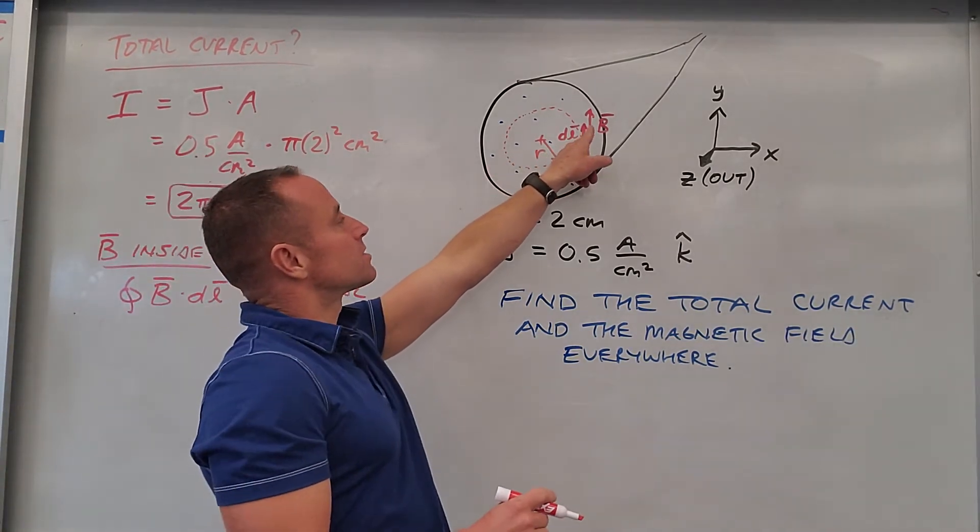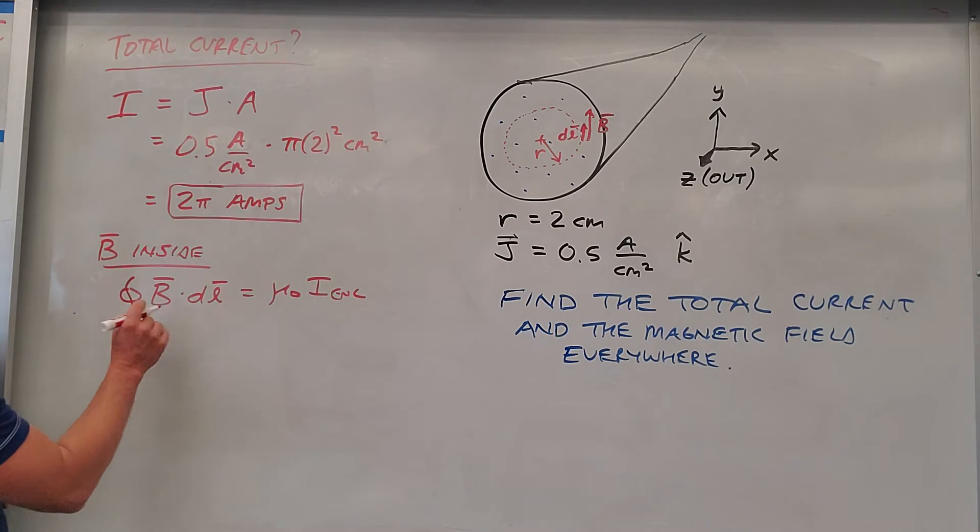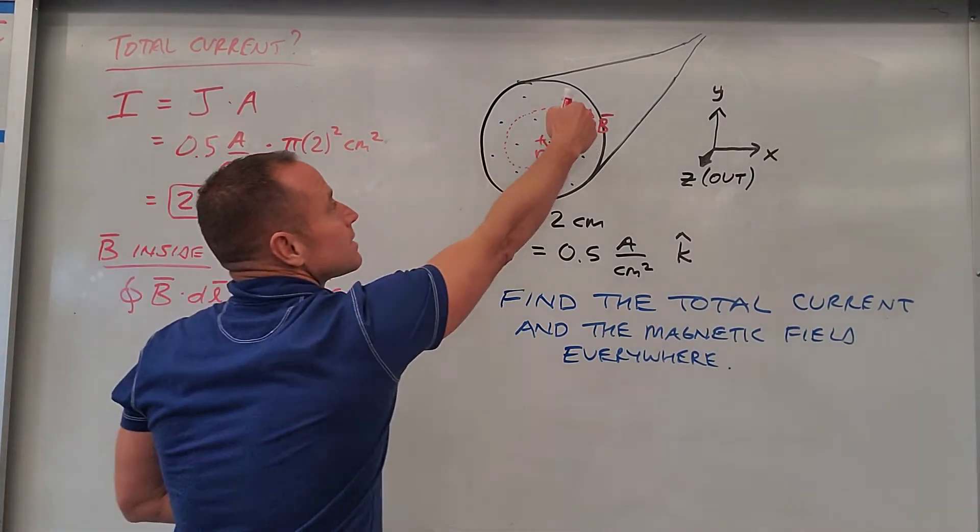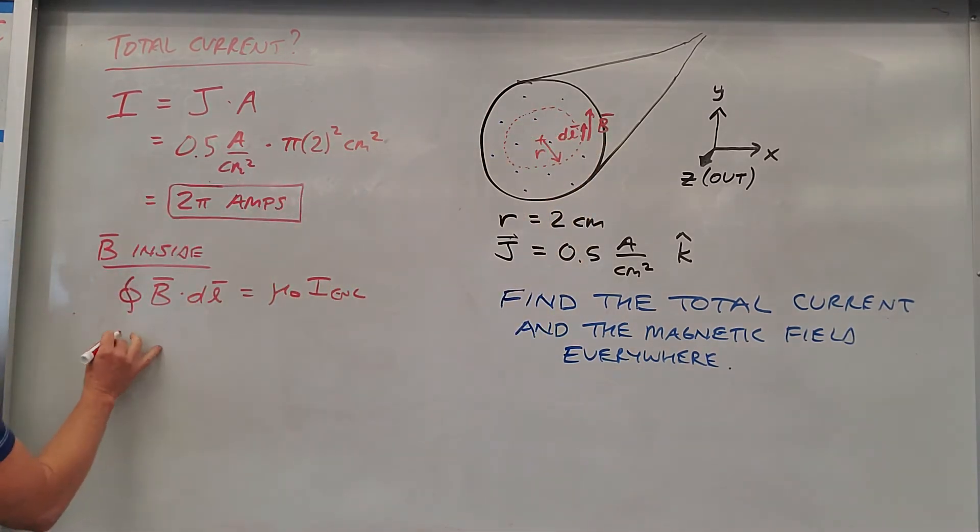Well, B and dl are parallel to each other, so it's just the integral of B times dl. B⋅dl just becomes Bdl. But also B is going to be constant all along this loop, at least in magnitude, so that would come out. So you'd have B times basically the integral of all the dl's equals μ₀ times